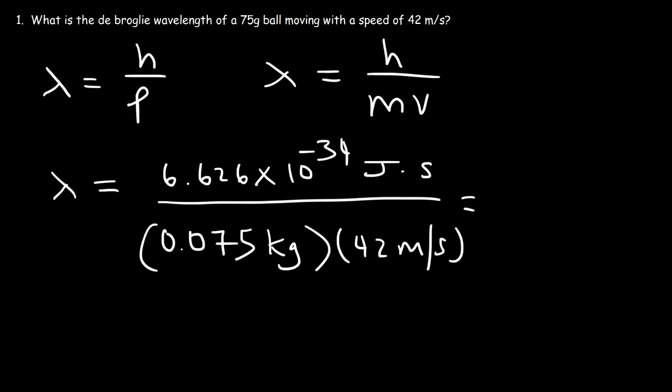So let's go ahead and plug in these values. The wavelength of this object is going to be very, very small — it's 2.1 times 10 to the minus 34 meters.